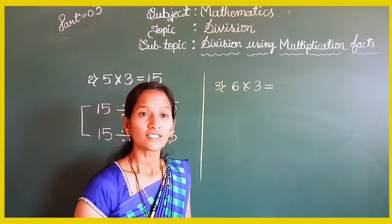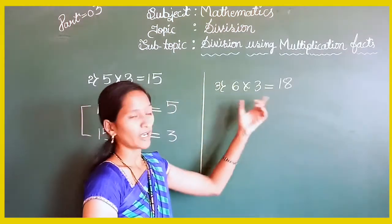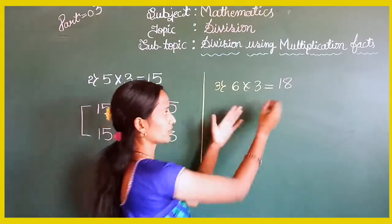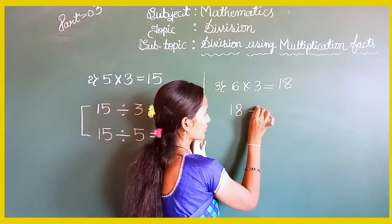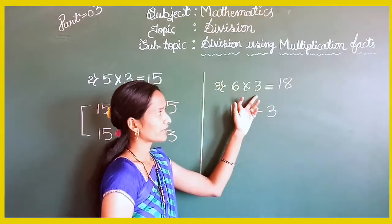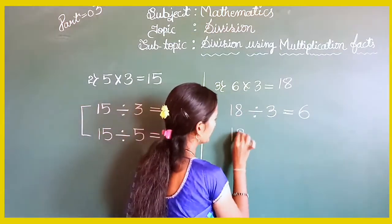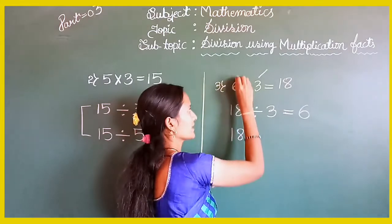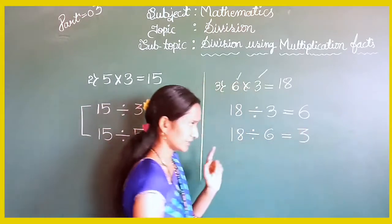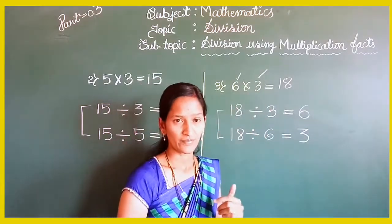In the table of 6, 6 threes are equals to 18. This is a multiplication fact. How can you write this as a division fact? First write down 18, then the division symbol, then 3 — so 18 divided by 3 equals 6. That is the first division fact. The second case: 18 divided by 6 equals 3. These two are the division facts of the given multiplication fact.